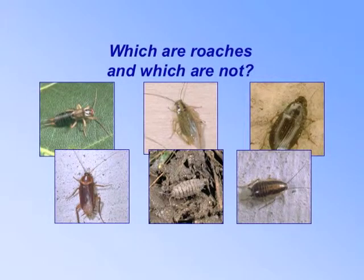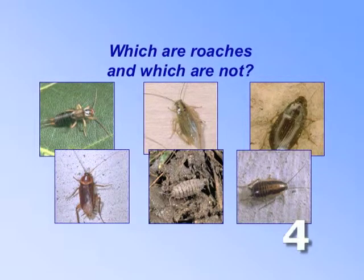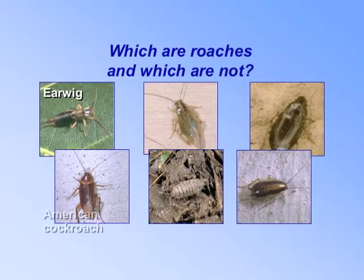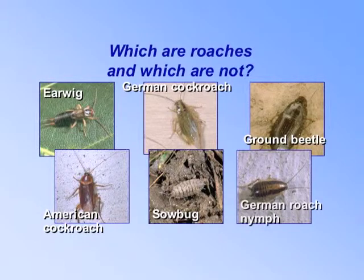Which are roaches and which are not? Press pause now. The answer will be revealed in five seconds. These are an earwig, American cockroach, German cockroach, sow bug, a ground beetle, and a German cockroach nymph.